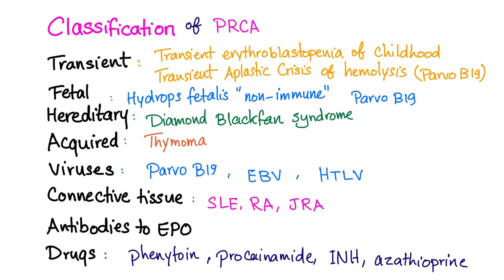Classification — that's a biggie. Pure red cell aplasia can be transient, such as transient erythroblastopenia of childhood or transient aplastic crisis of hemolysis, the latter due to Parvovirus B19. Fetal forms include hydrops fetalis — the non-immune type — also caused by Parvo B19. Hereditary forms include Diamond-Blackfan syndrome. Acquired causes include thymoma; viruses such as Parvovirus B19, Epstein-Barr, and Human T-cell leukemia virus; connective tissue diseases like lupus, rheumatoid arthritis, and juvenile rheumatoid arthritis; antibodies to EPO (which impairs RBC production); and drugs such as phenytoin, procainamide, isoniazid, and azathioprine.